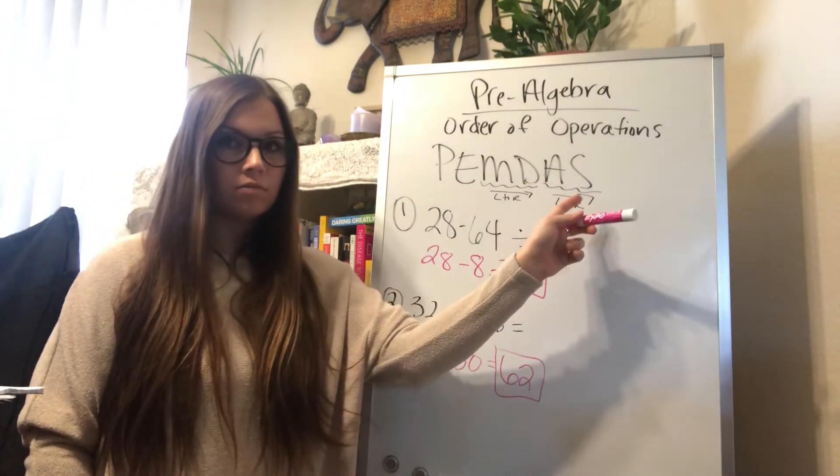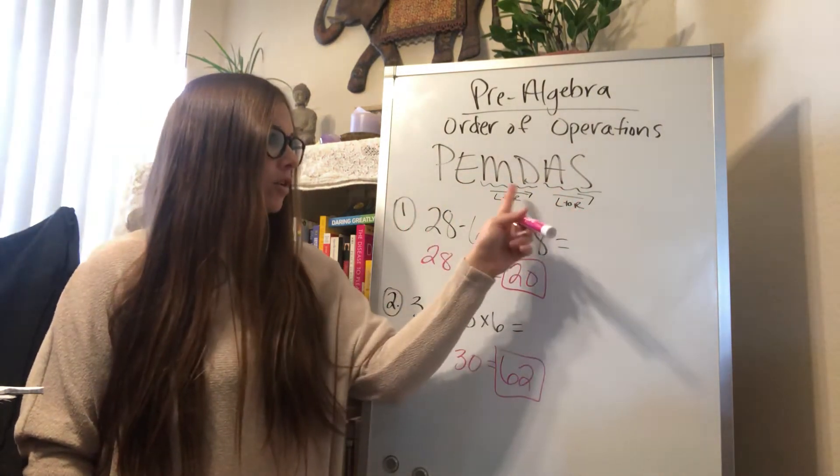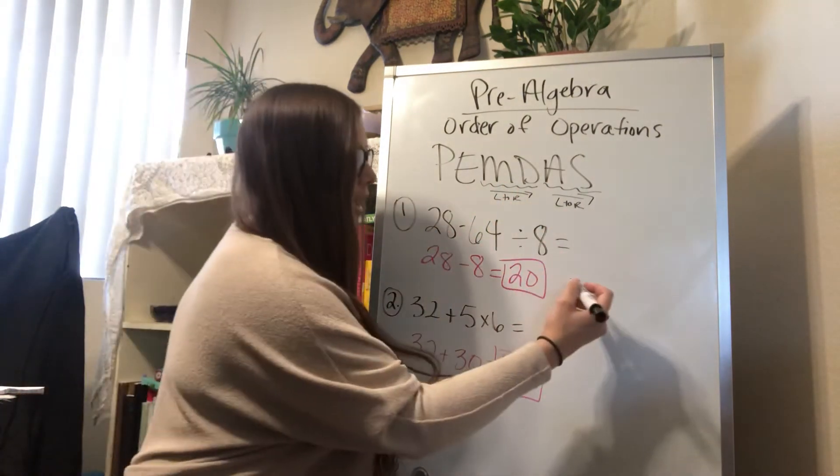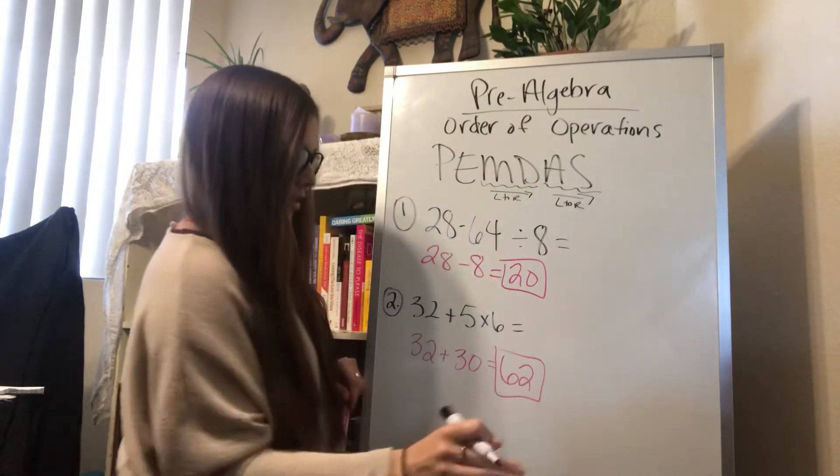And then after the multiplication and division, you can add and subtract, you can go left to right. That means if you had, let me erase this so I can show you.